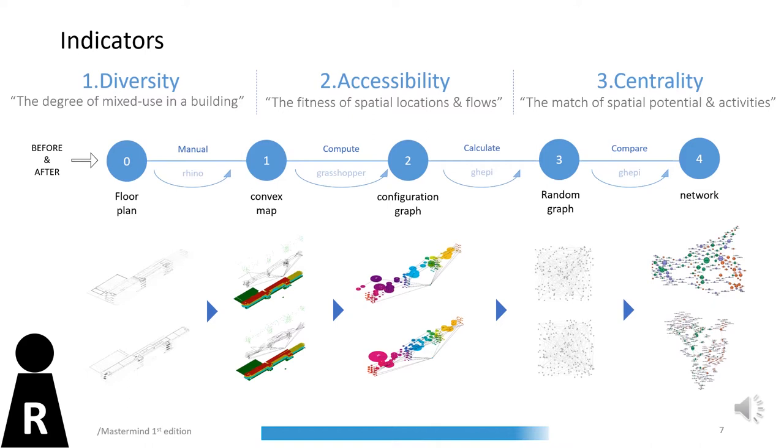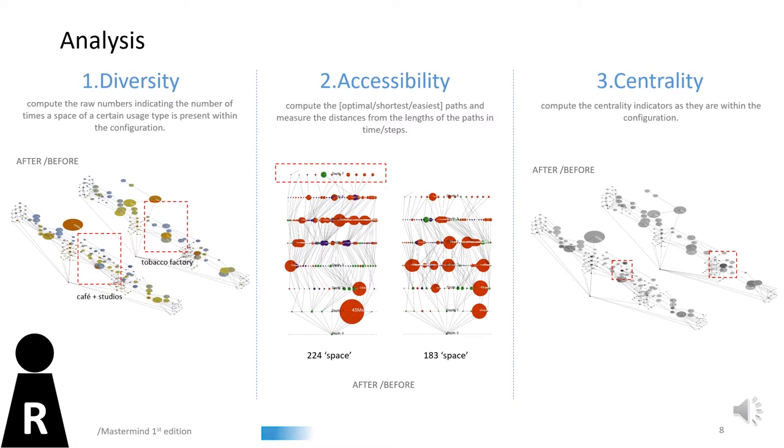The diversity of space went higher, especially in the old tobacco factory, thanks to the newly added function. As a likely consequence, with more spaces, the accessibility went lower accordingly.